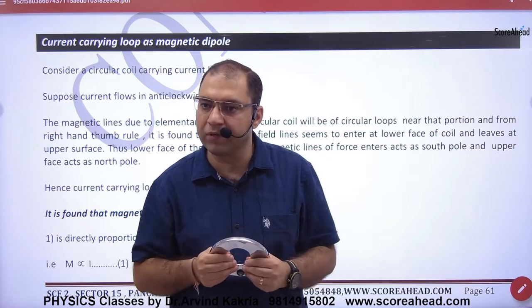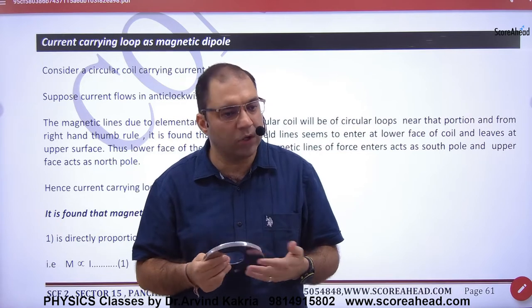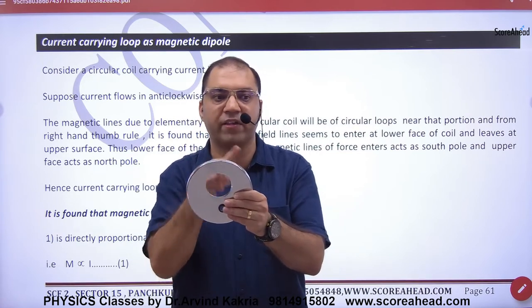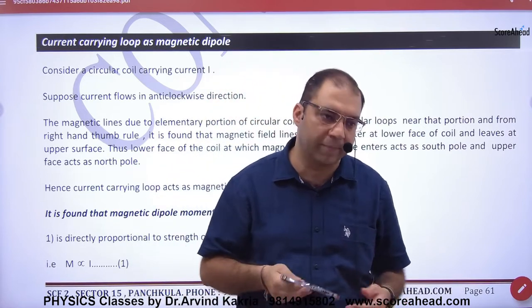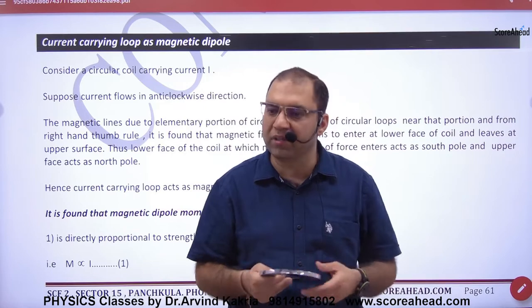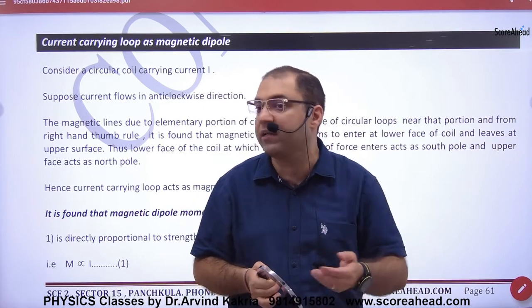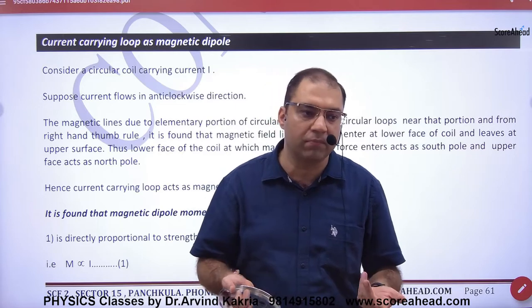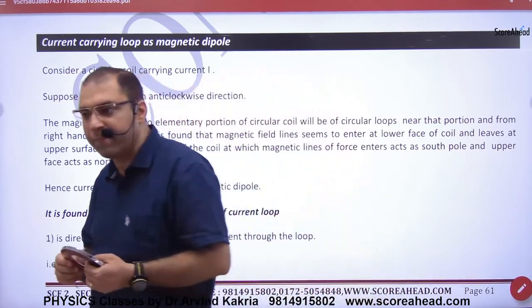If the direction of current is changed — if it is anticlockwise, now it is north. The poles are not fixed; the current decides them. These are imaginary poles. In truth, you are not going to find real poles. But because B is generated, we have to decide poles based on that.